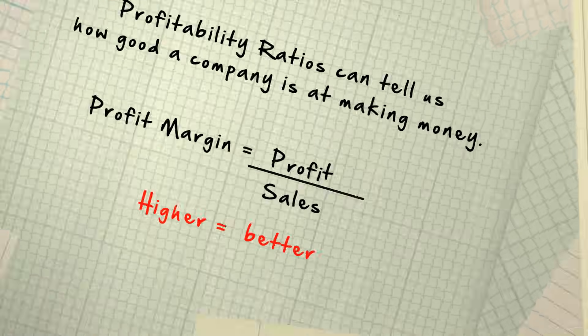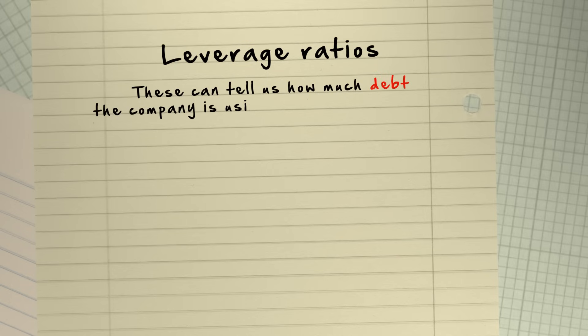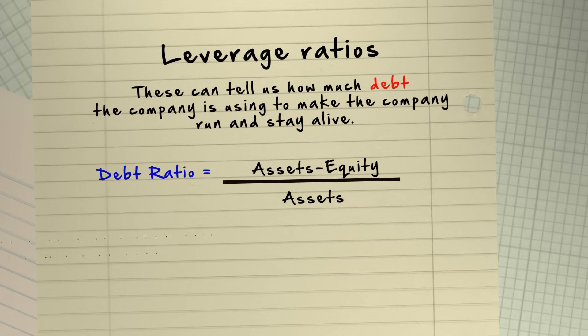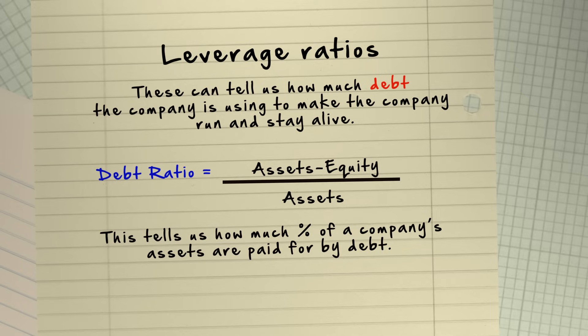What about leverage ratios? These can tell us how much debt the company is using to make the company run and stay alive. An example of this is the simple debt ratio. This tells us what percentage of a company's assets are paid for by debt. Normally, a company is considered safer when the debt ratio is low.